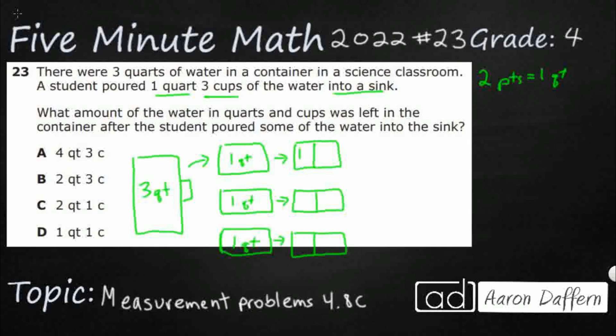All right, so PT is going to be our abbreviation for pint. Now, pints don't really help me yet because I need quarts and cups. But if I look again, I'll see that two cups, represented with C, equals one pint. So that's going to get me to the level that I want.